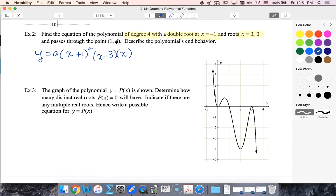We go through the point (1, 4). So 4 equals a times, one plus one squared is four, one minus three is negative two, and that would just be one. So this will be negative eight. That tells me my a value is negative one-half.